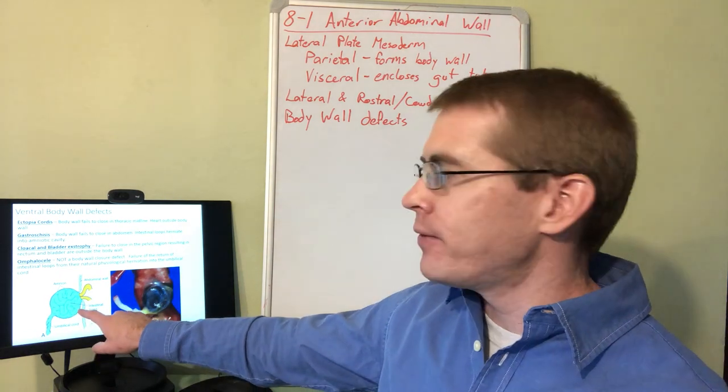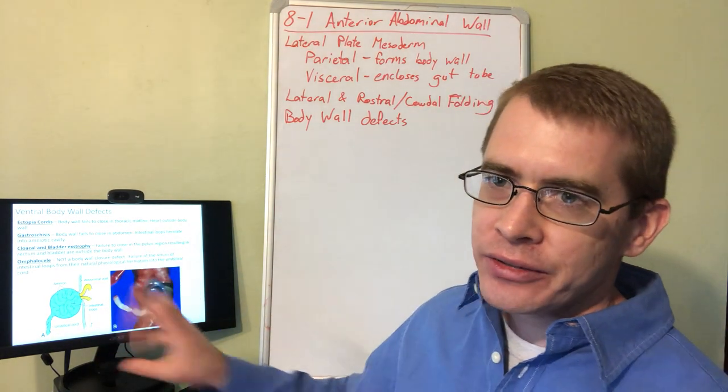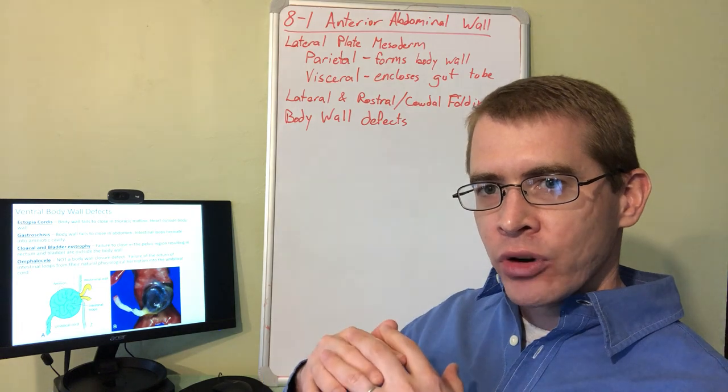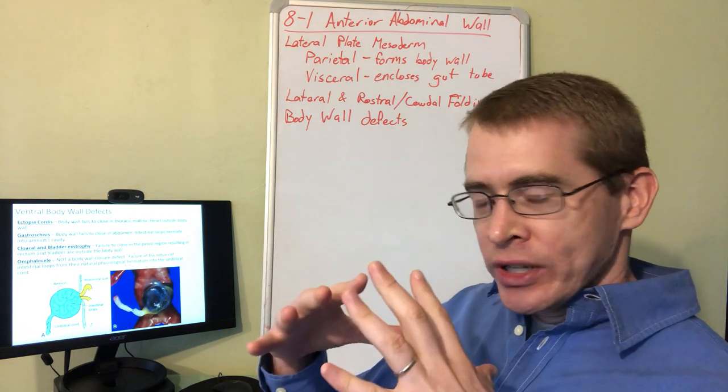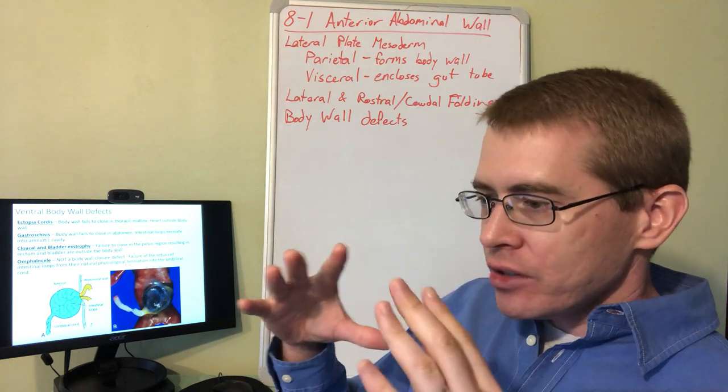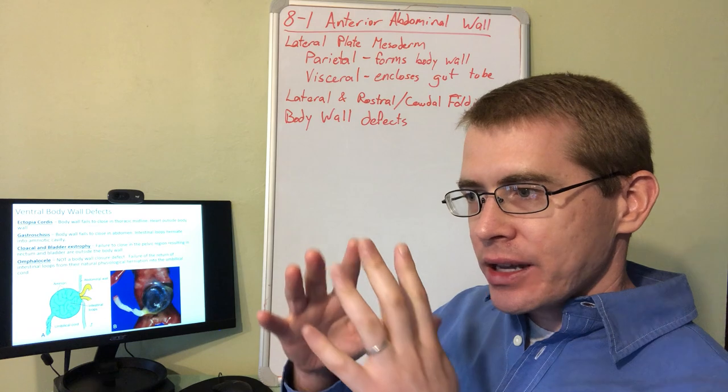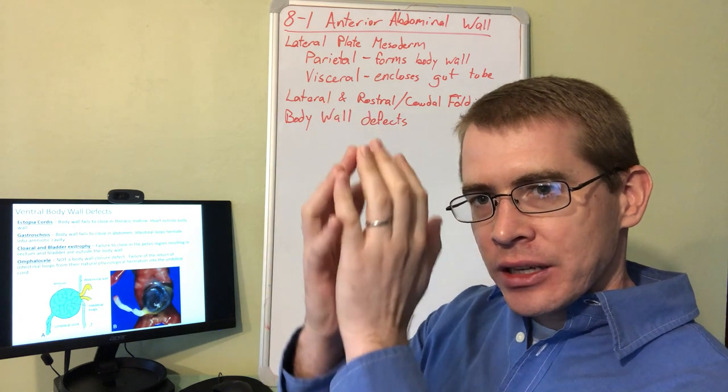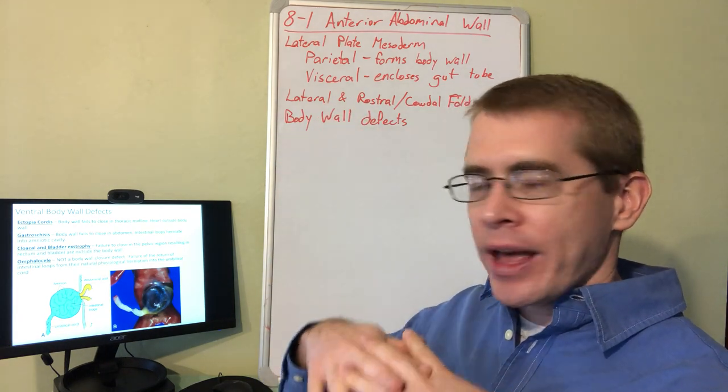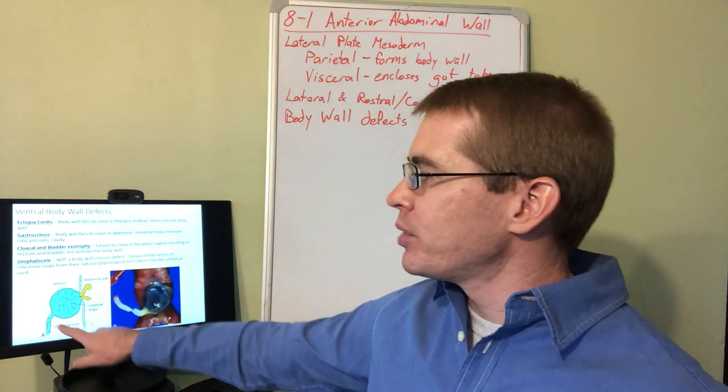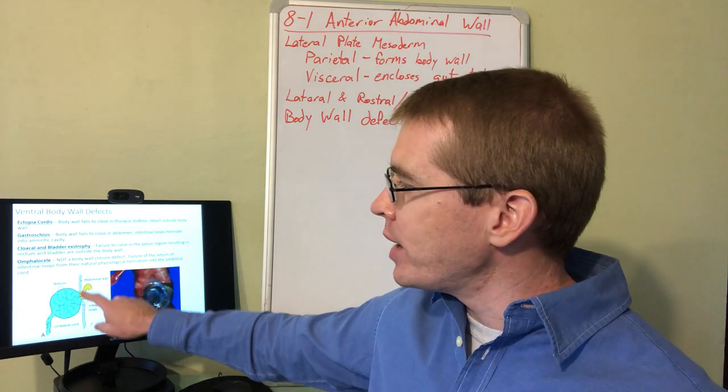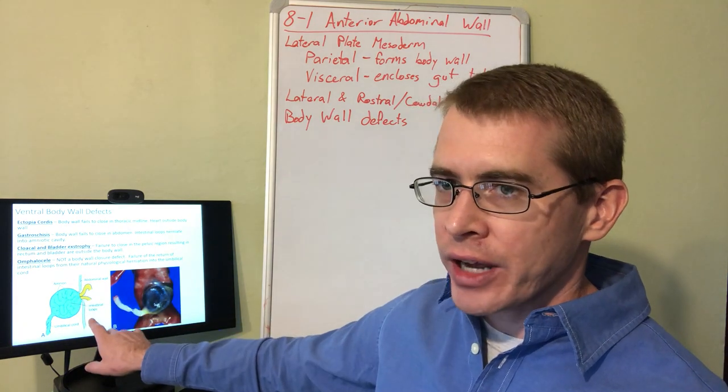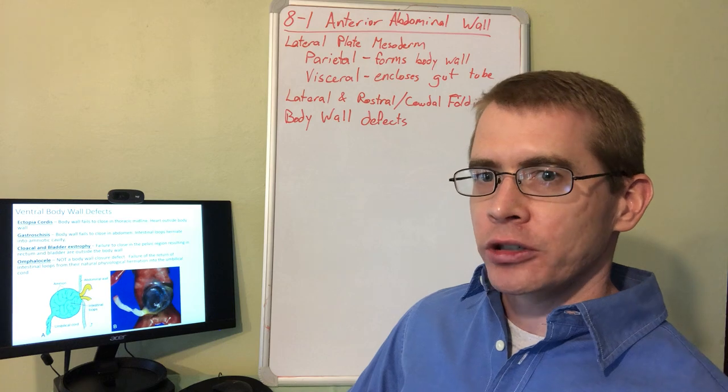Here on the left, we have an example of an omphalocele. This is not a defect of body wall closure. An omphalocele is a failure of that physiological retraction of the yolk sac. The body wall is closing as normal, and the gut tube is forming as normal, except as it's protruding out and forming outside the abdominal wall, it doesn't end up retracting back into the abdomen. So a portion of it ends up in the umbilical cord. This is a ventral body wall defect which is not the result of a body wall closure problem.